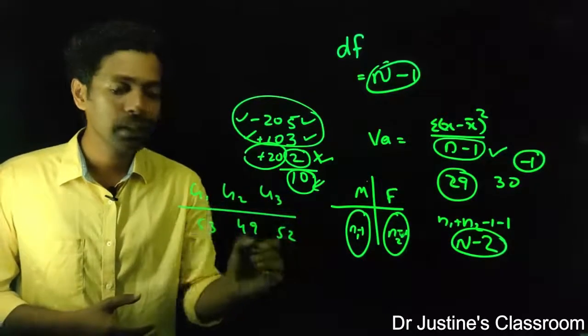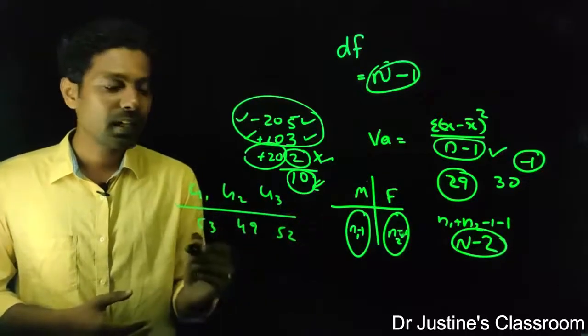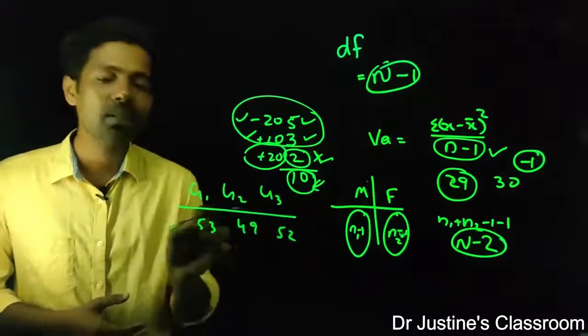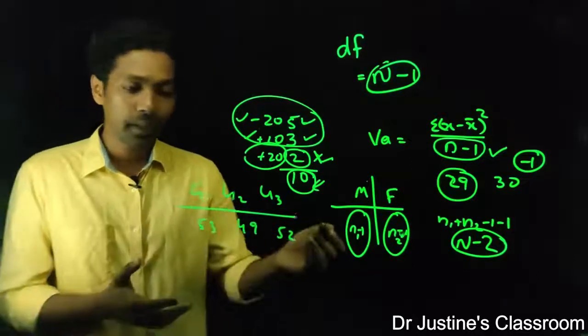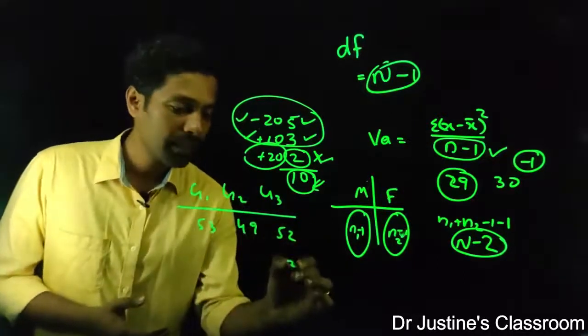So how many observations I have? Three observations. So the variance between these three observations is between group variance. What is the degree of freedom? 3 minus 1.